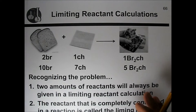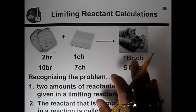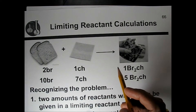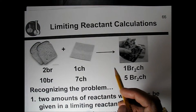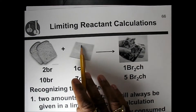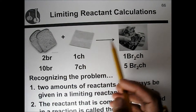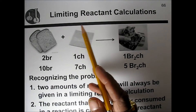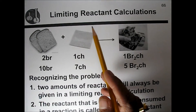We will study now limiting reactant calculation, which is almost the last topic of this stoichiometric chapter number three. Limiting reactant, as the name says, means there is a limit for one reactant.